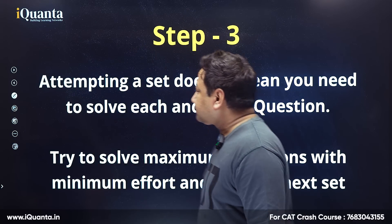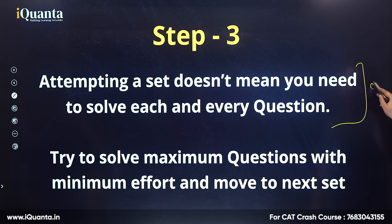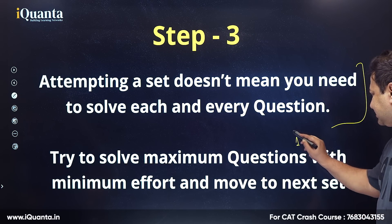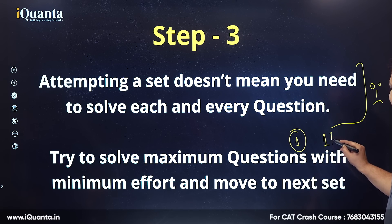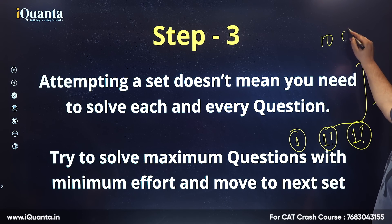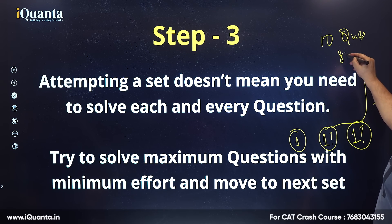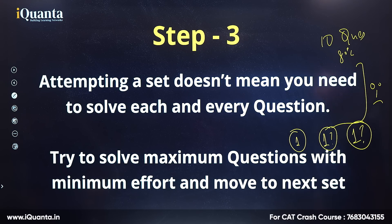Step 3: attempting a set doesn't mean you need to solve each and every question — practically, that can be impossible. Try to solve the maximum questions with minimum effort and move on to the next set. Essentially, complete the easy set, then do 2-3 questions from the moderate set, and then one more set. Ideally, your aim should be solving 10 questions with 80% accuracy, which will fetch you at least the 97th percentile in the DILR section.